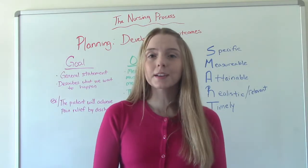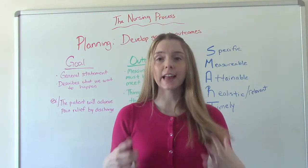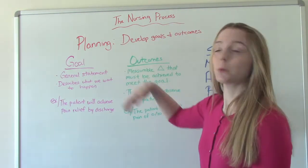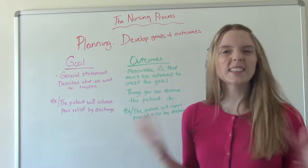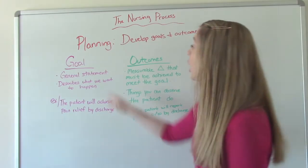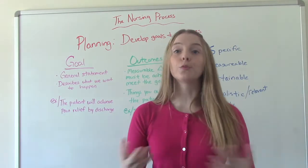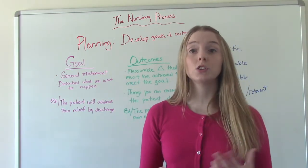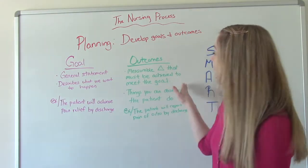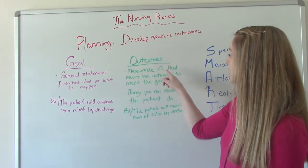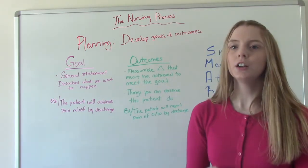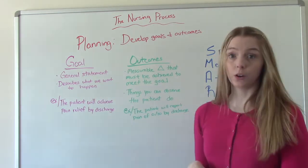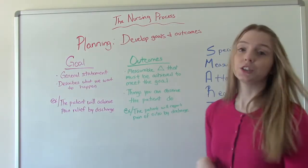We've done our assessment, figured out an appropriate diagnosis — now it's time to make our plan. In the planning stage, we develop our goals and outcomes for our patient. What's the difference? A goal is a general, broad statement about what we want to happen — what experience we want the patient to have. An outcome is a lot more specific; it's a measurable change that must be achieved in order to meet the goal — something you can observe the patient do.